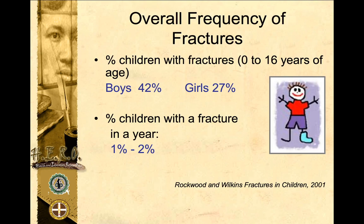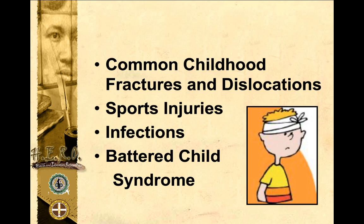The overall frequency of fractures for boys is around 42% and for girls around 27%, with a fracture-related injury every year of around 1% to 2%. We will discuss the common childhood fractures in education, sports injuries, infection, and battered child syndrome — four topics covered in the succeeding slides.